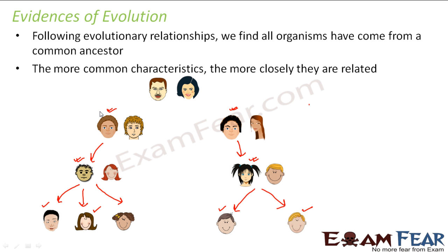Two own brothers look very similar to each other. Cousin brothers look a little less similar because they are not that closely related — they share the common genes of their grandfather. The more the similarities, the more close the relationship is. This is not only true for human beings, but for all living organisms. Based on this simple fact, the evolutionary relationships between different living organisms were actually deduced.